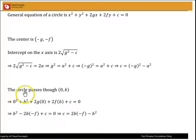Now the circle passes through 0, b, so plugging in x equal to 0, y equal to b in the equation of the circle, we get 0 squared plus b squared plus 2g times 0 plus 2f times b plus c is equal to 0.